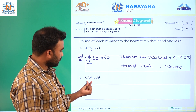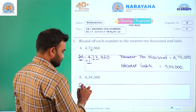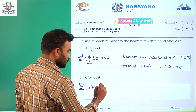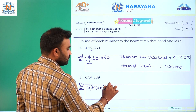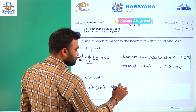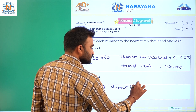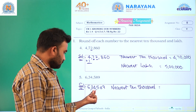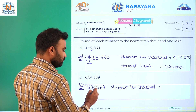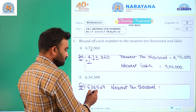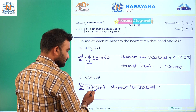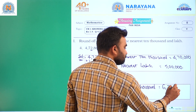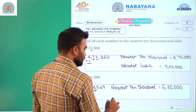Next number: six lakh thirty-four thousand five hundred eighty-nine. For nearest ten thousand: check the thousands place — it is four, which is smaller than five. So we make it zero and write the number as it is, giving us six lakh thirty thousand.